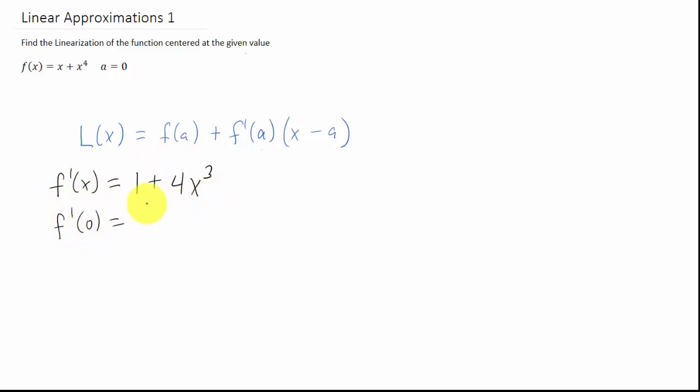We specifically want the slope of the tangent line at this x value, a equals zero in this case. We get that the slope of our tangent line is one for this example, and that's going to go right here in a second.